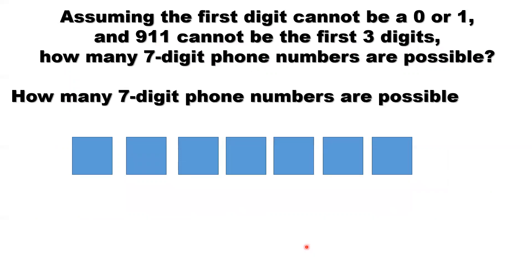First of all, we consider a different situation. Only use the first condition. So we want to find how many 7-digit phone numbers are possible if the first digit cannot be 0 or 1 without using the second condition.